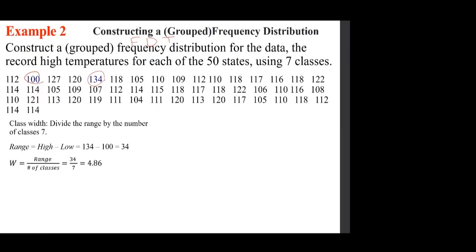We find the smallest and largest values. The difference is called the range: R equals max minus min, or high minus low. The width comes out to 4.86, so you want a width that covers everything. Since 4.86 is not clean, we round up — always round up. So we choose five.